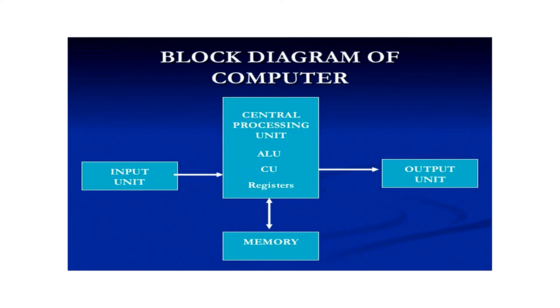The input unit helps us to accept data from the user. Data can be accepted in many forms — text, audio, pictures, and anything else. There are various input devices that help us accept data from the user, which we will cover during the course of this session. The central processing unit converts the accepted data into output — it is basically the processing unit which converts input to output.